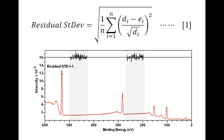In a peak maximum the uncertainty is much greater in an absolute sense than in the background. But by using residual standard deviation and dividing by the uncertainty known from Poisson statistics, we make a fit to data at a peak maximum equal in importance to a fit in the background. This statistic is therefore intended to make all points in a spectrum used in a peak fit of equal importance.